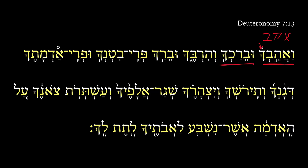And he will bless you. Here we have the piel. Notice the resh rejects the normal dagesh of the piel, and we get lengthening of the first vowel. So we have the piel perfect 3MS plus a 2MS suffix of the root barach — he will bless you. And he will cause you to be many.